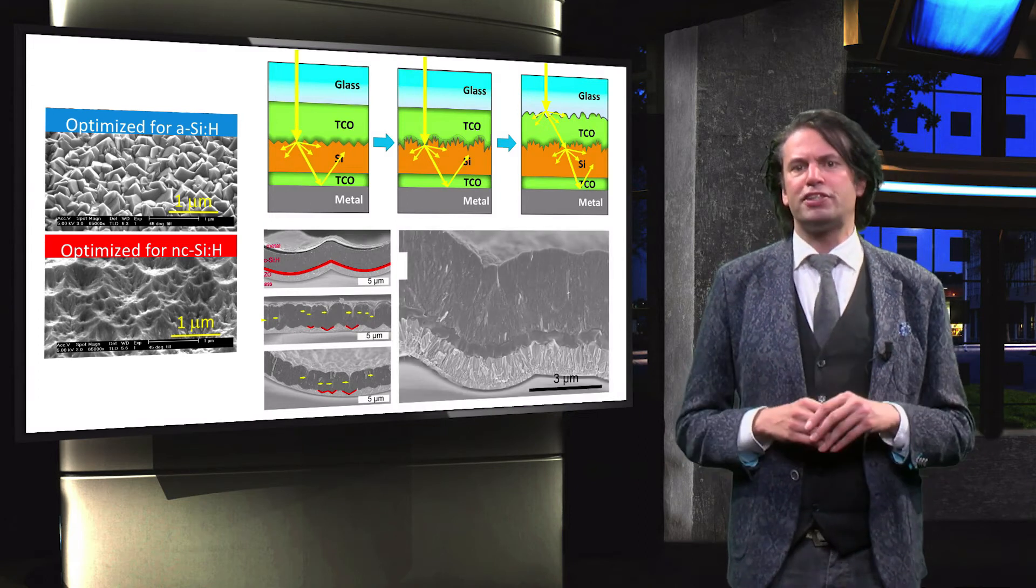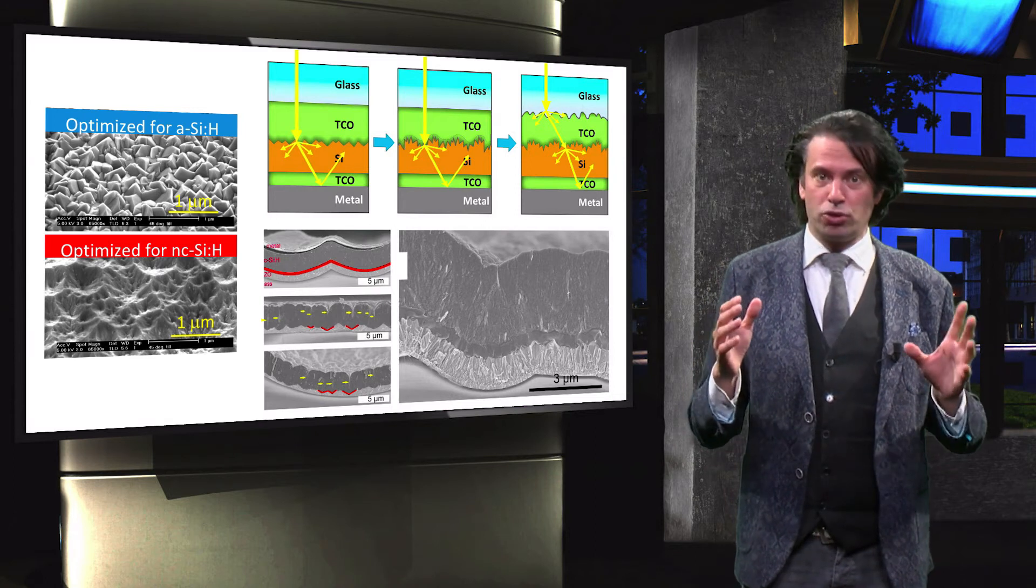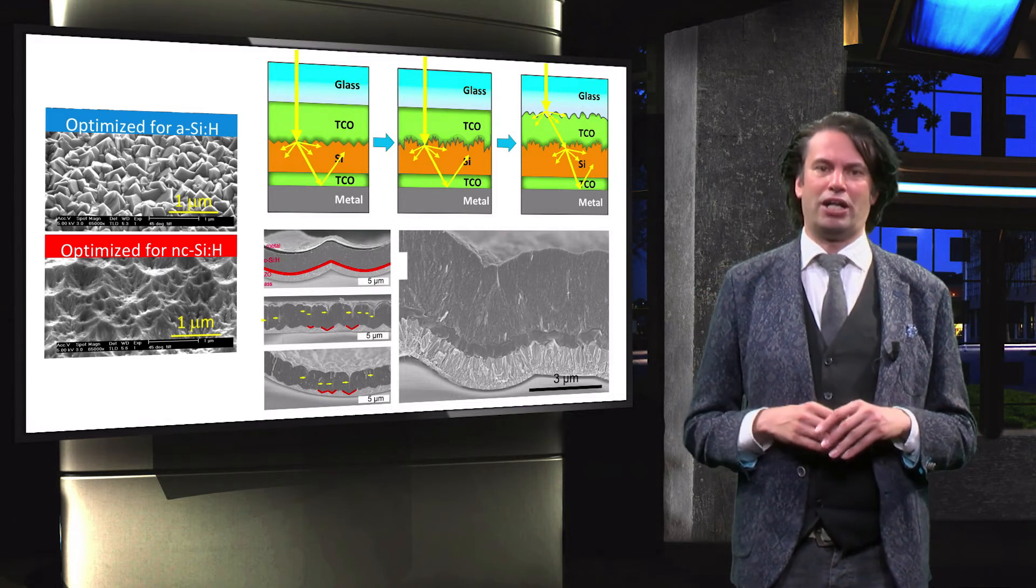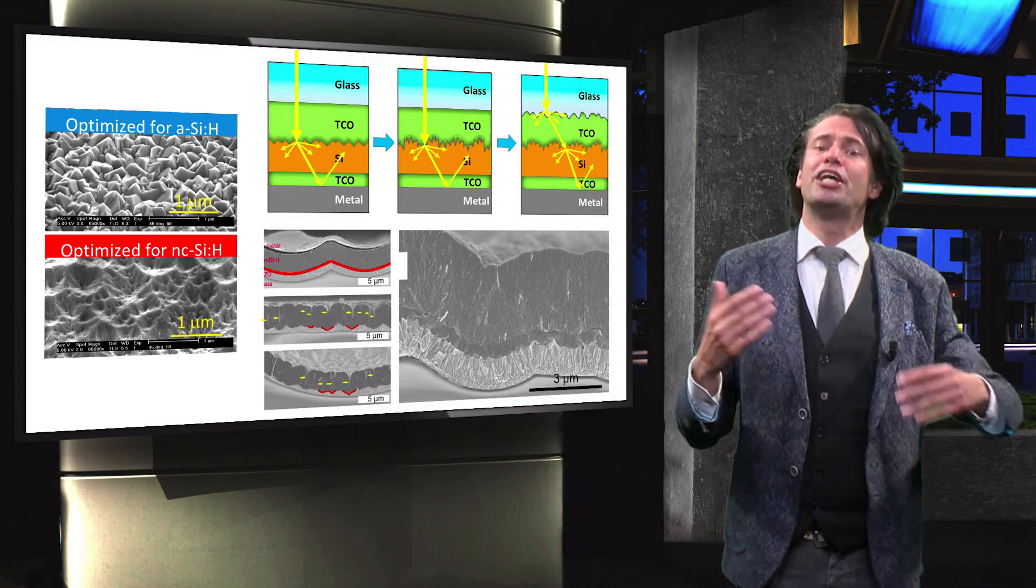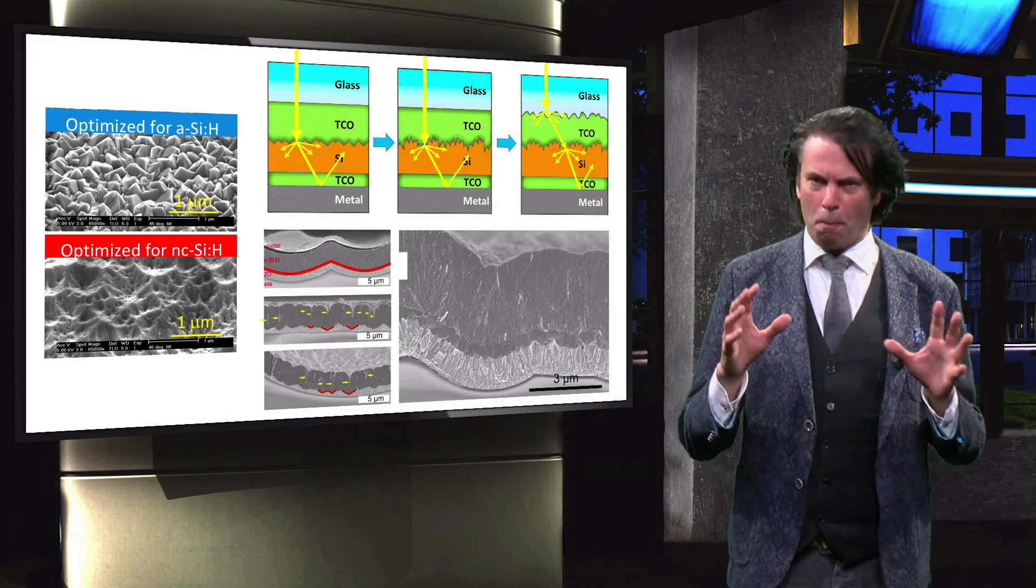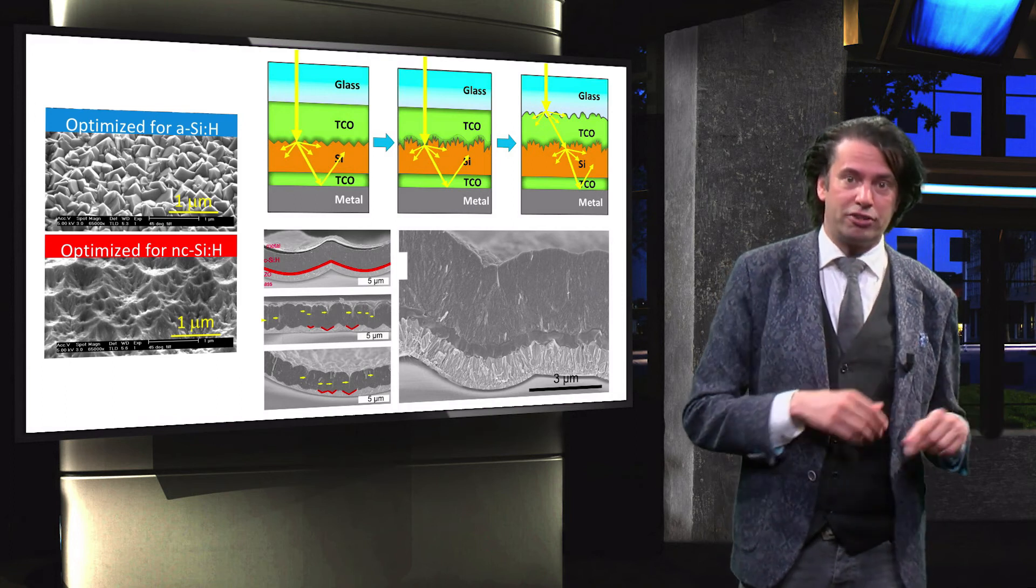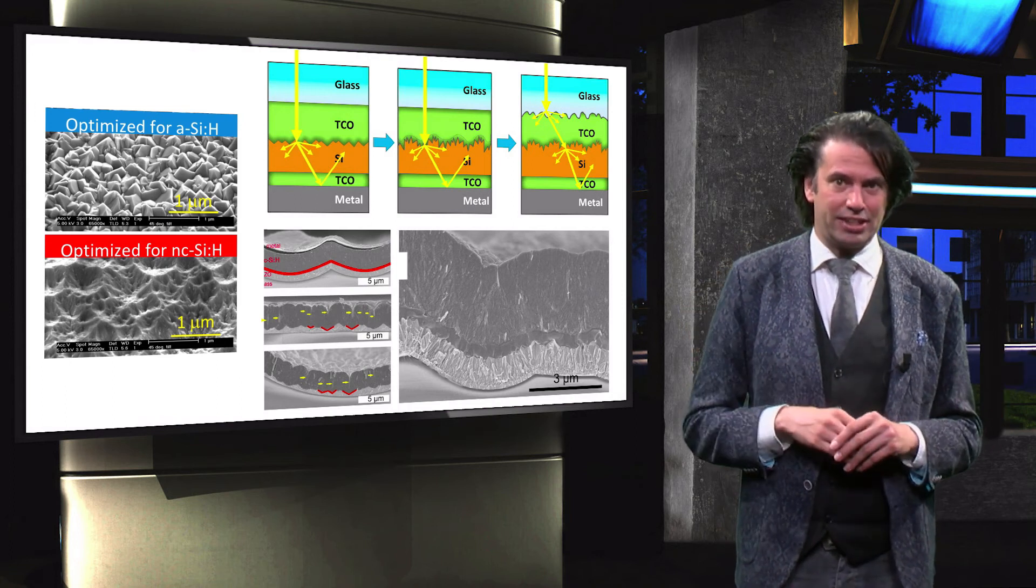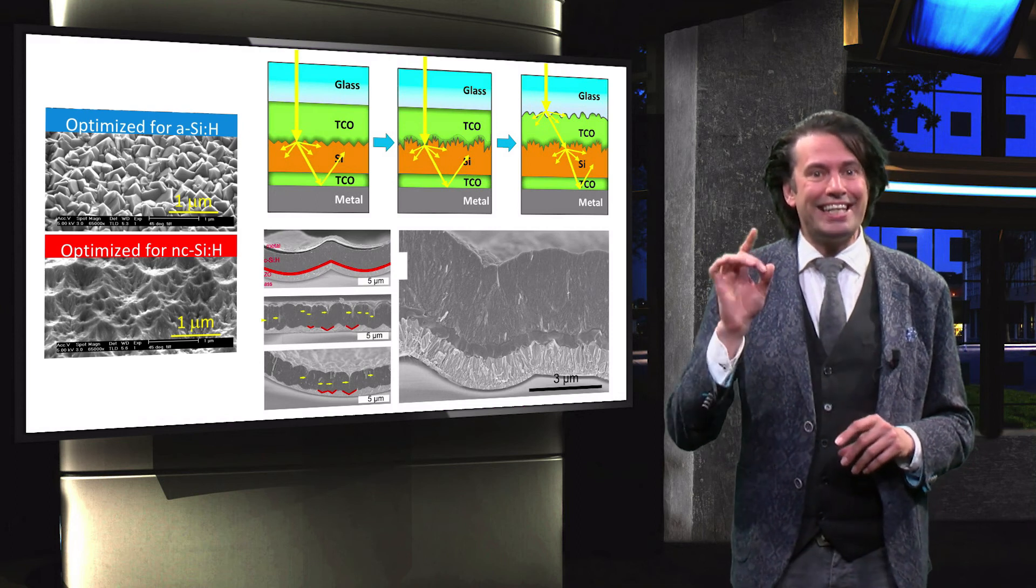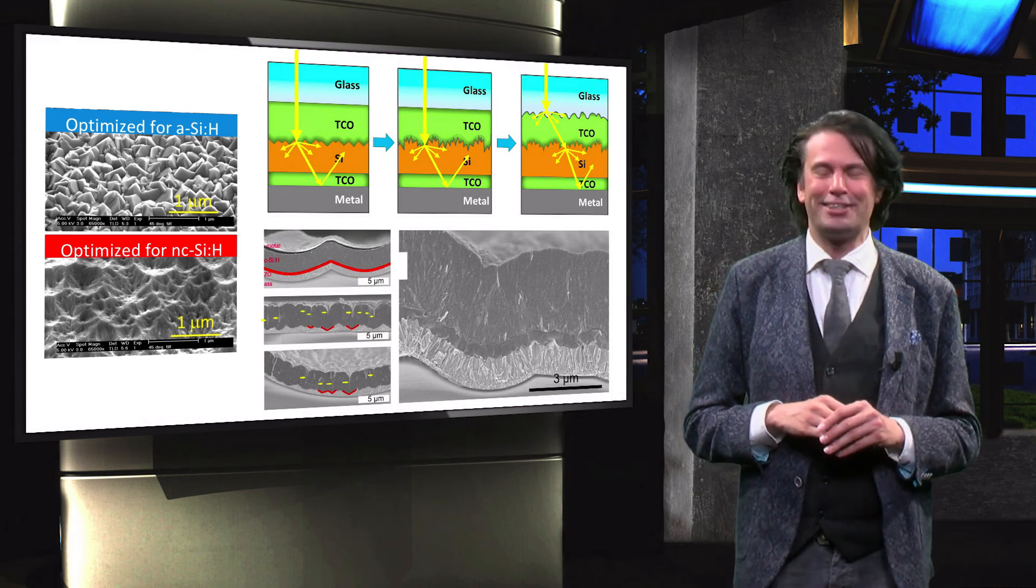The modulated surface texture of the record micromorph tandem solar cells processed at Delft University has been introduced as well. Here, a modulated surface texturing approach is combined with highly transparent front electrodes based on hydrogenated indium oxide and intrinsic zinc oxide to achieve state-of-the-art performing tandem cells.